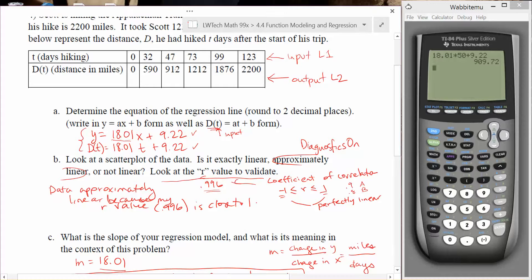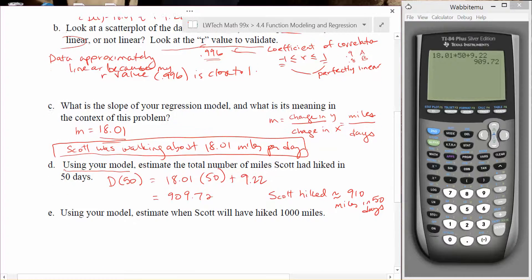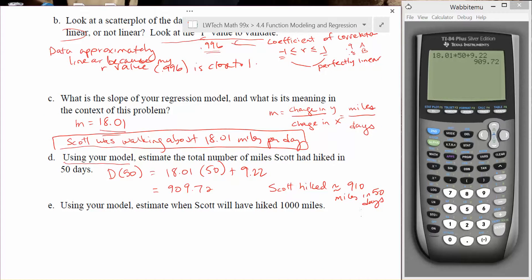And if you can kind of see up here, it's not a perfect fit, right? At 47 days he'd actually hiked 912, but it's the best fit of data that we can get for our information from our calculator here. The next piece that it's asking us, but it's not far off.